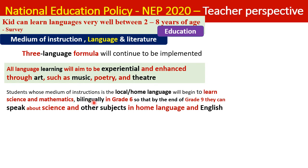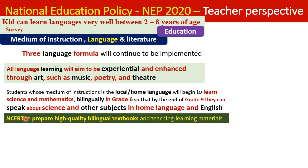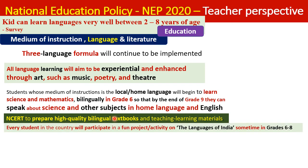From Grade 6, education becomes bilingual. NCRT has been tasked with preparing high-quality bilingual textbooks for Science and Mathematics at higher levels in both local language and English. All students must also participate in a fun project or activity on the languages of India, which can happen between Grades 6 and 8.